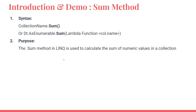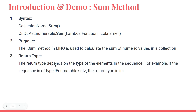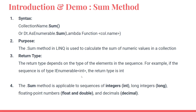The sum method in LINQ is used to calculate the sum of numeric values inside a collection. The return type depends on the type of elements in the sequence — if the sequence contains integers, the output will be an integer; if it contains doubles, the output will be a double. Based on your input type, the calculation will happen accordingly.